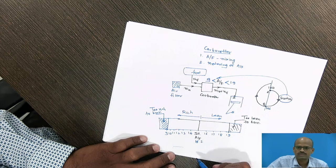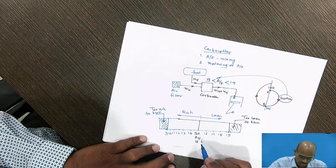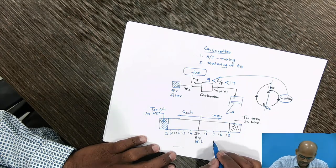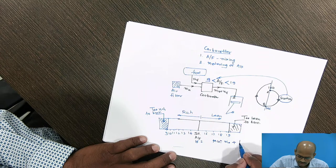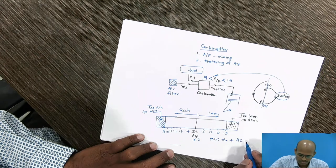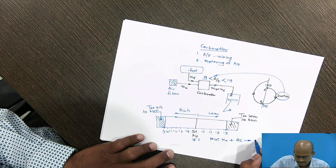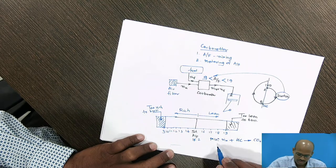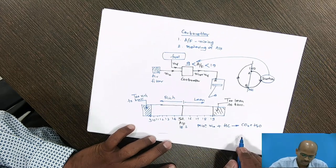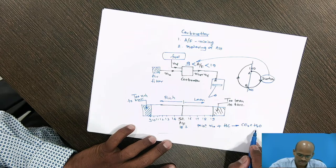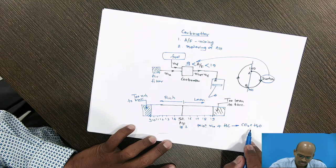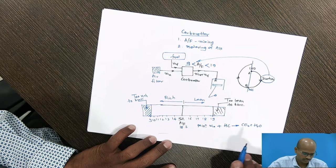What is the stoichiometric air-fuel ratio? The stoichiometric air-fuel ratio means the minimum mass of air required to burn the fuel completely. For a complete combustion reaction, there will be two products only: the first product is CO2 and the second product is H2O, obviously in gaseous form.